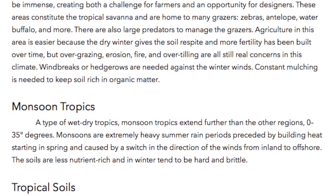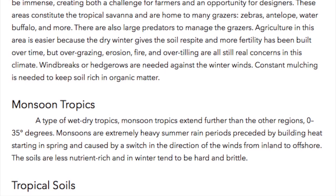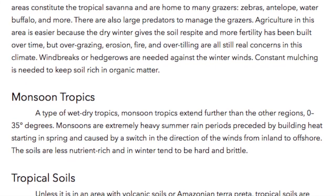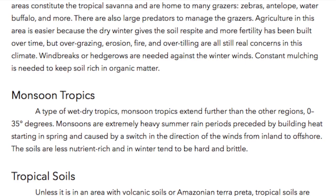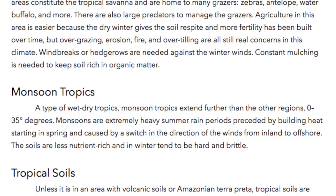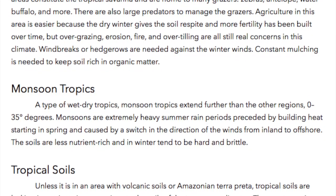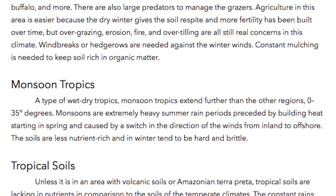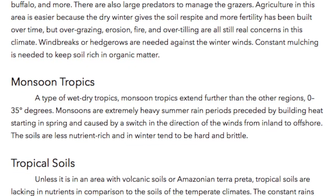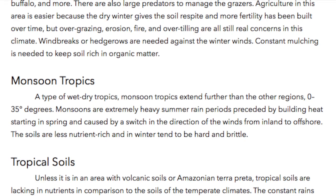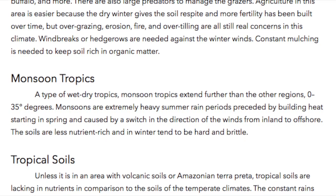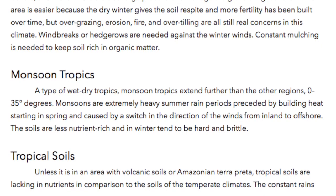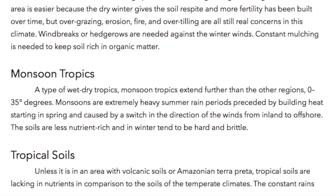Monsoon Tropics. A type of wet-dry tropics, monsoon tropics extend further than other regions — zero to 35 degrees. Monsoons are extremely heavy summer rain periods preceded by building heat starting in spring, caused by a switch in the direction of the winds from inland to offshore. The soils are less nutrient rich and in winter tend to be hard and brittle.